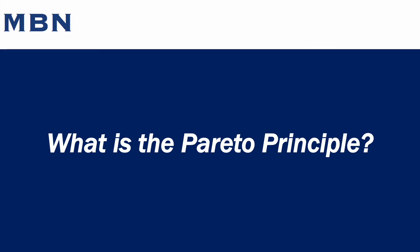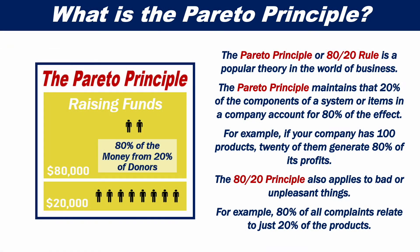What is the Pareto principle? The Pareto principle, or 80-20 rule, is a popular theory in the world of business. It maintains that 20% of the components of a system or items in a company account for 80% of the effect.